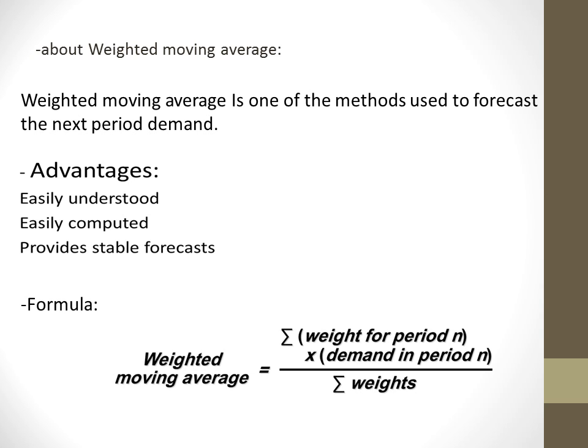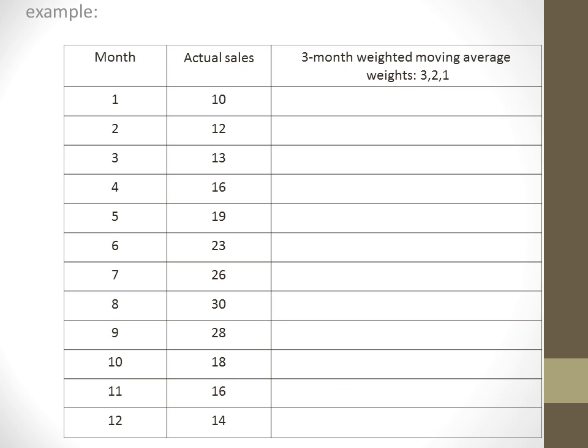This is the formula of weighted moving average. It's the summation of multiplying the weight of the period with the demand of the period over the summation of weights. This formula will be clear with the example.